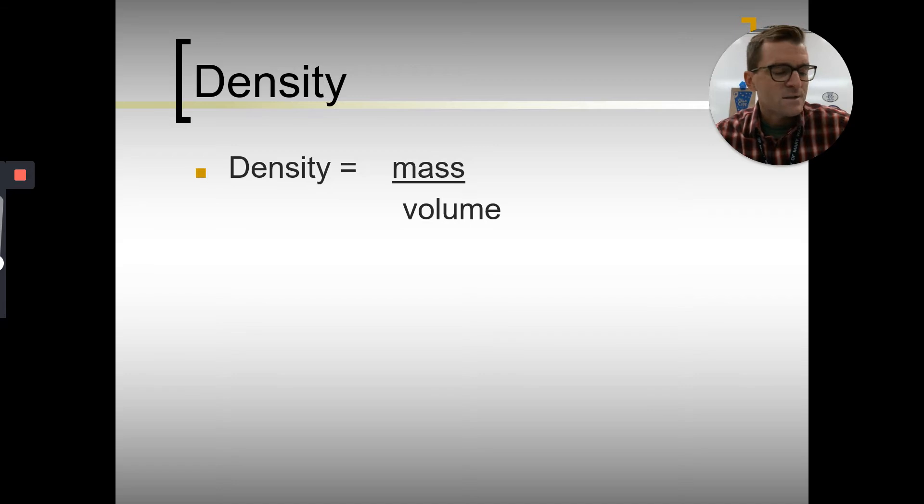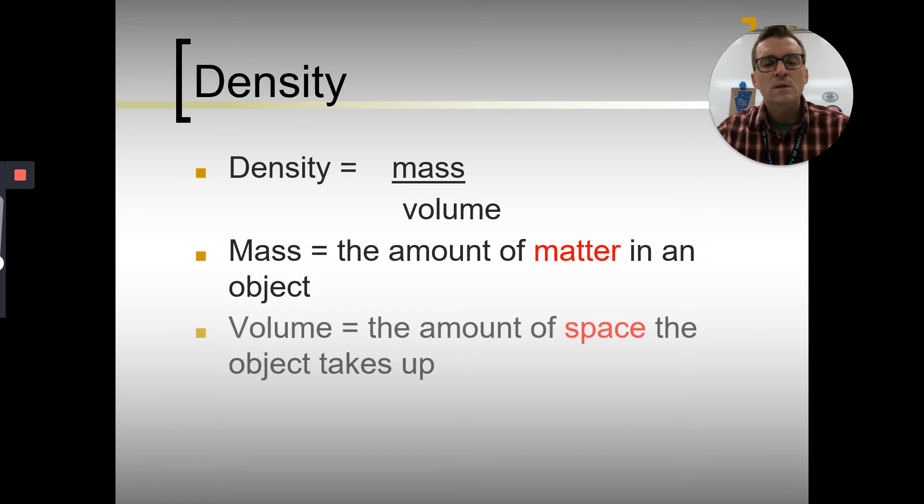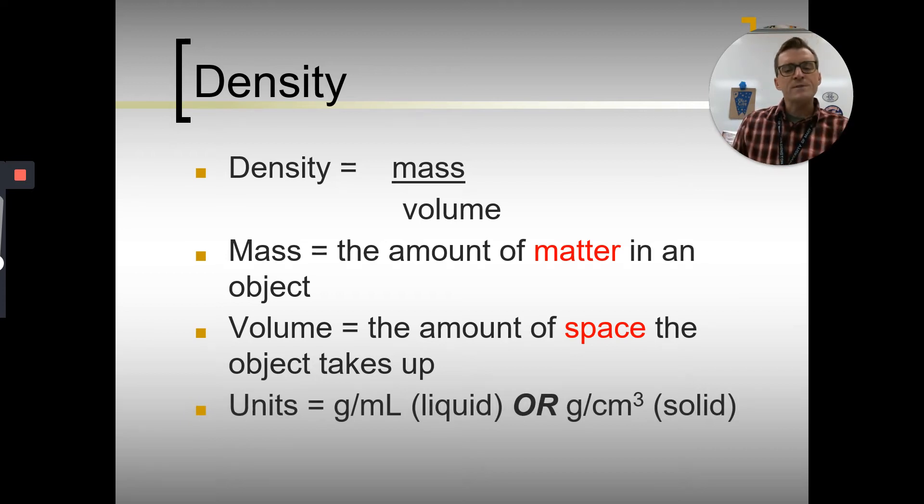So density on page two. Our formula for density is mass over volume. And what we're measuring is how much mass we have in a specific volume. Mass is how much we have, units are typically grams, maybe kilograms as well. Volume is how much space it takes up. With our units for volume, we typically have milliliters or cubic centimeters. Our units for density, if we're talking liquid, it's typically grams per milliliter. Or if it is a solid, it might be grams per cubic centimeter. These units can change depending on what you're using. The key thing is that we have units of mass over volume.